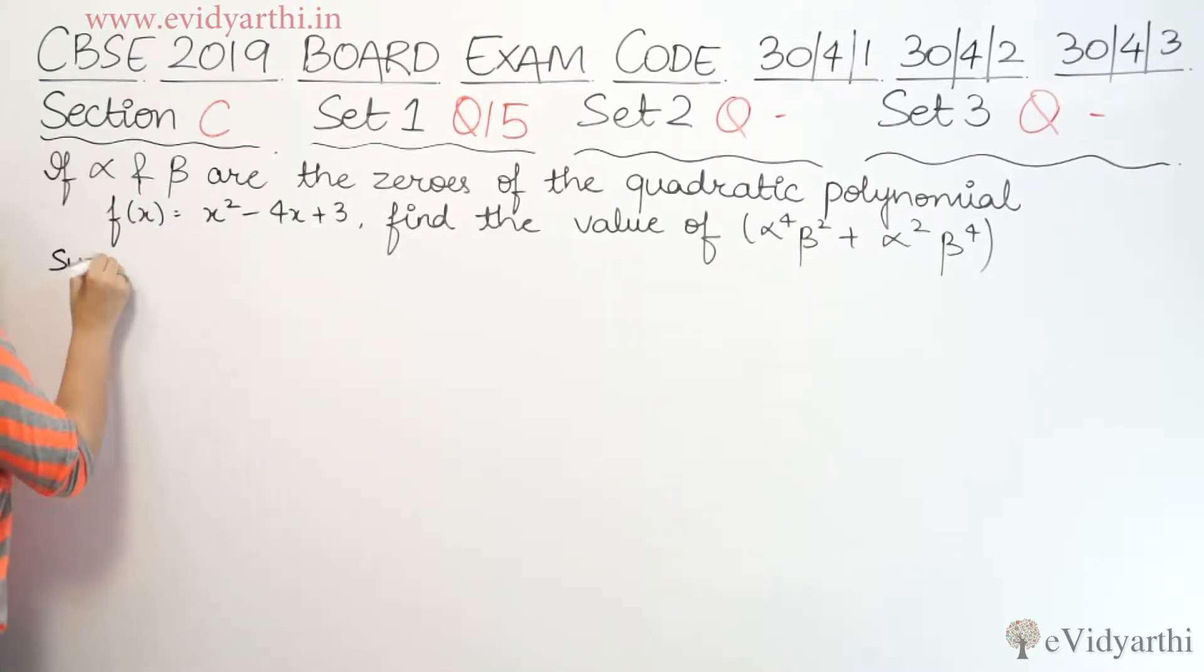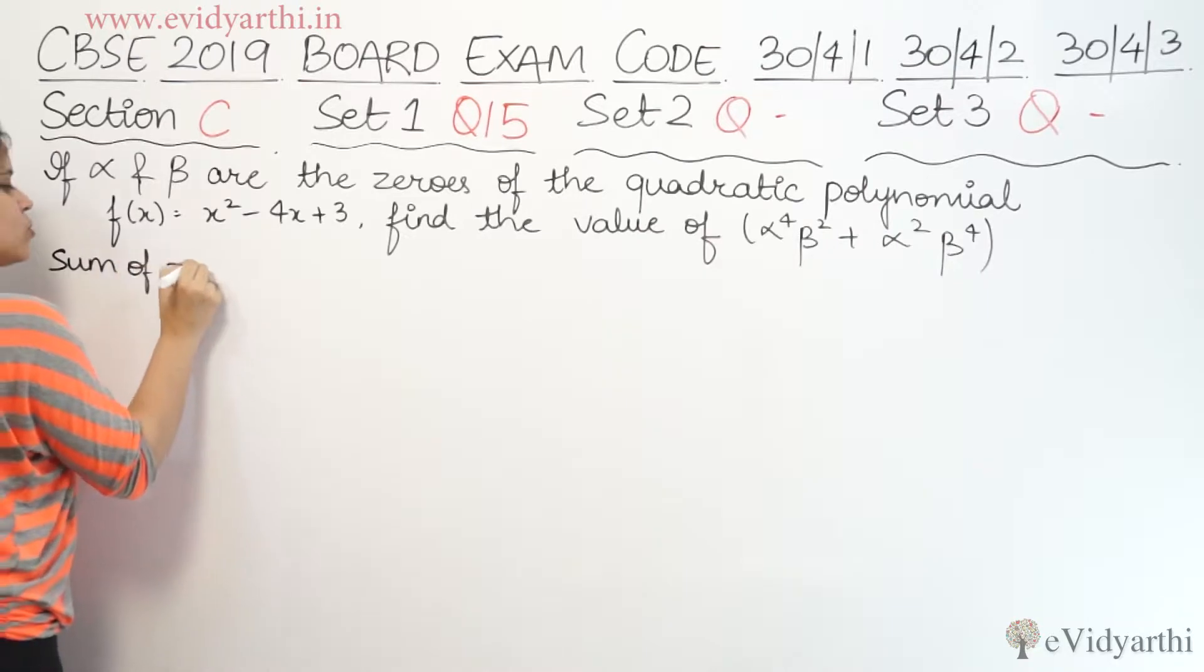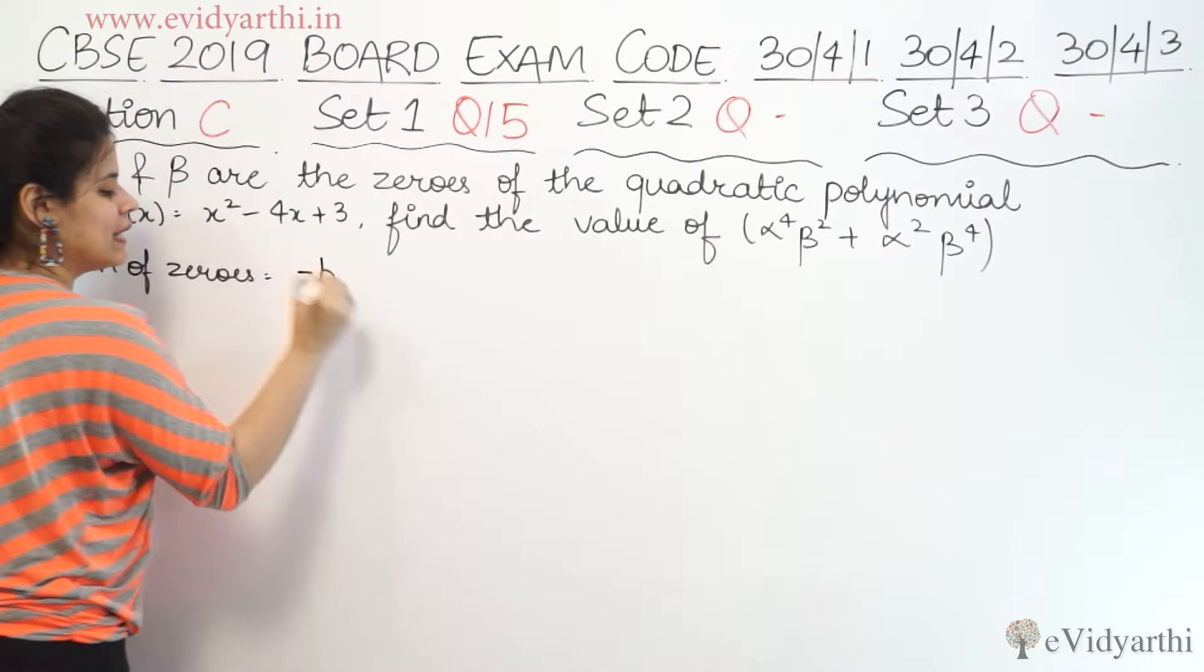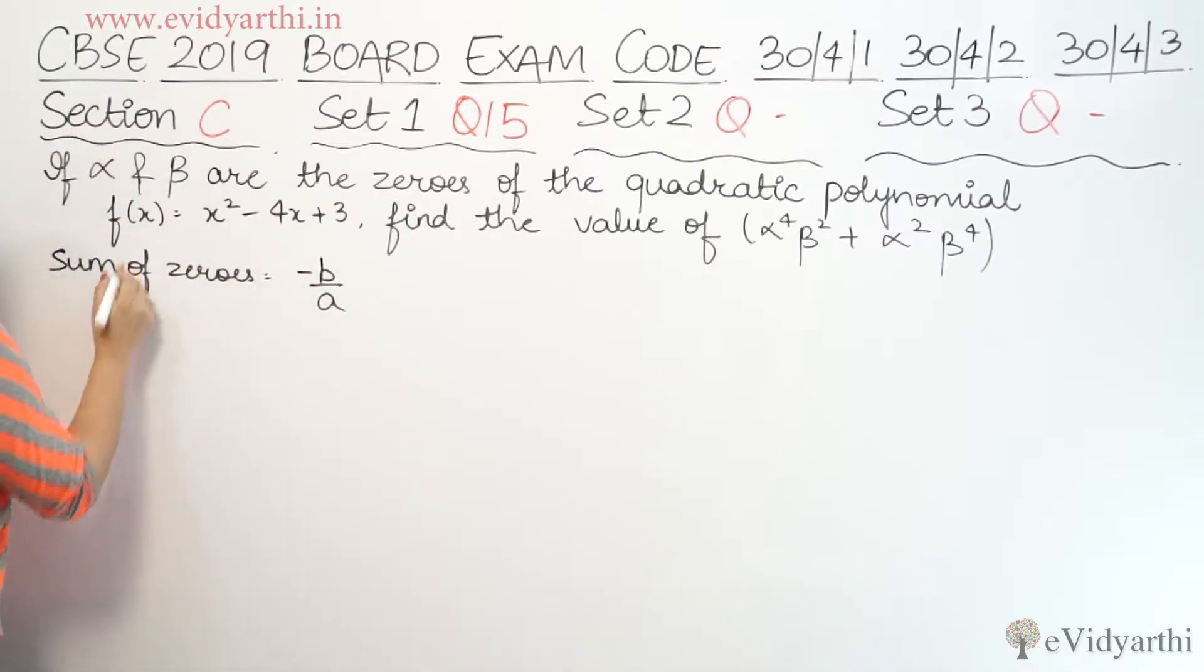We know that sum of zeros, sum of zeros is minus b upon a, correct? So sum of zeros I can write as alpha plus beta.